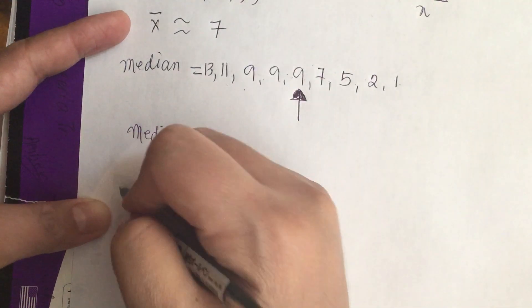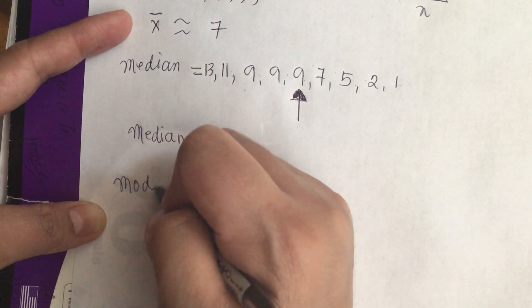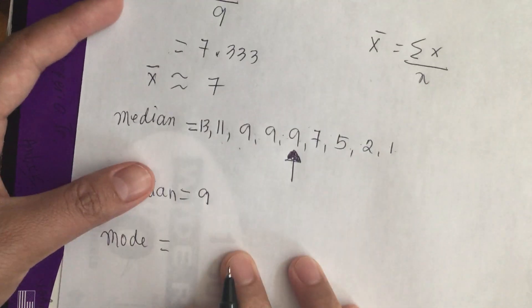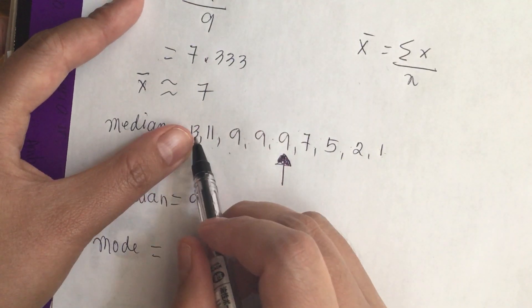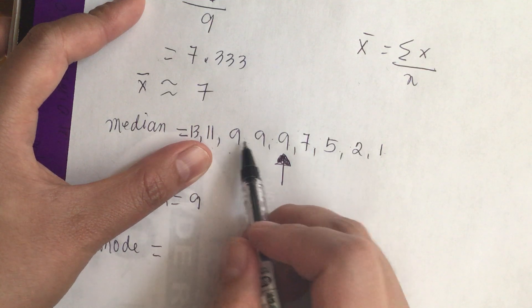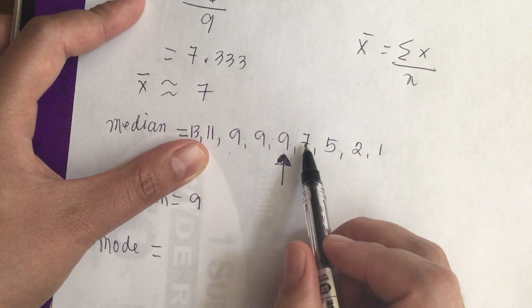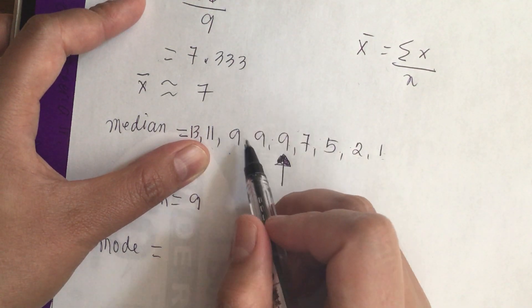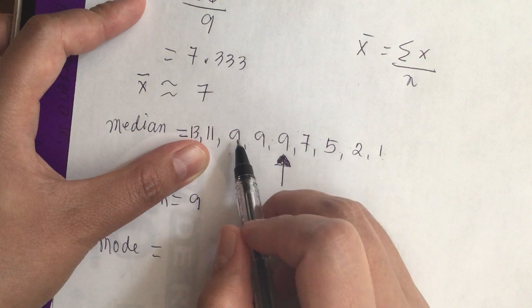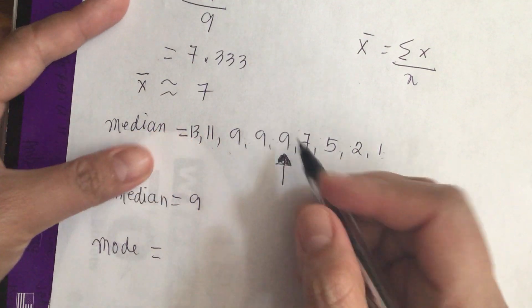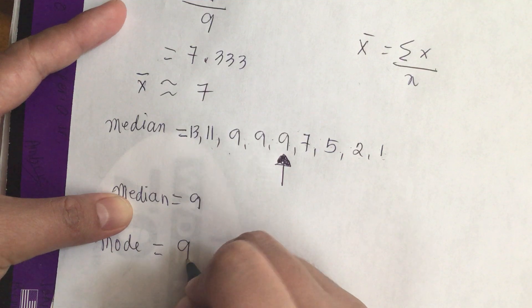Now the mode is the most popular number. Here we have 1 thirteen, 1 eleven, and there are 3 nines, 1 seven, 1 five, 1 two, and 1 one. The most popular number is 9 because there are 3 of them. So 9.